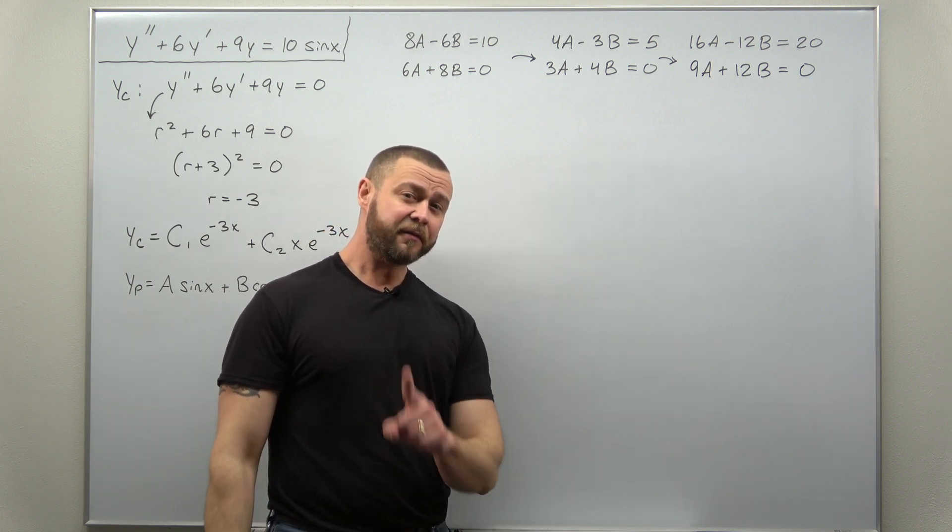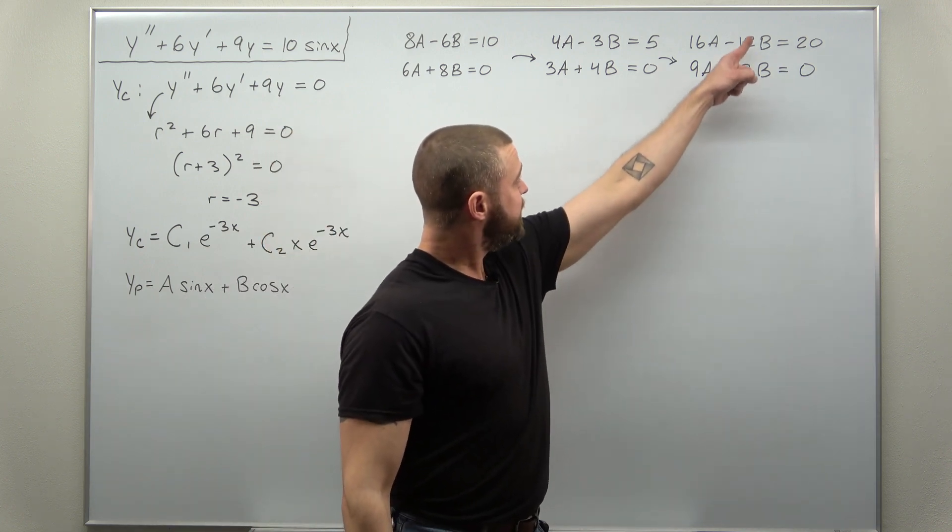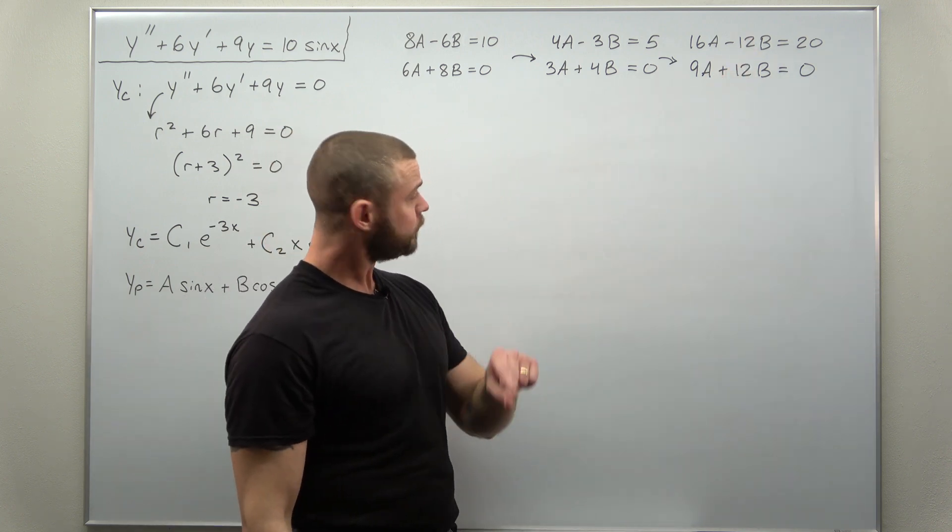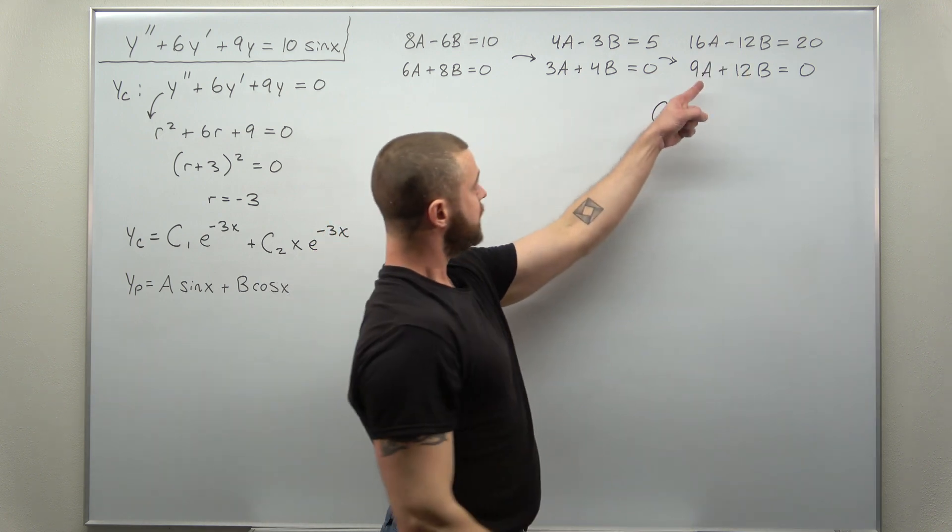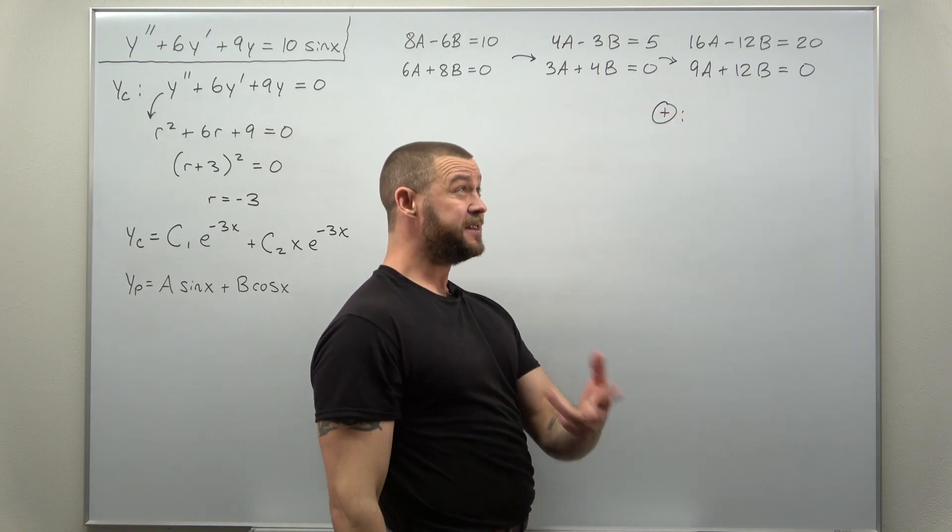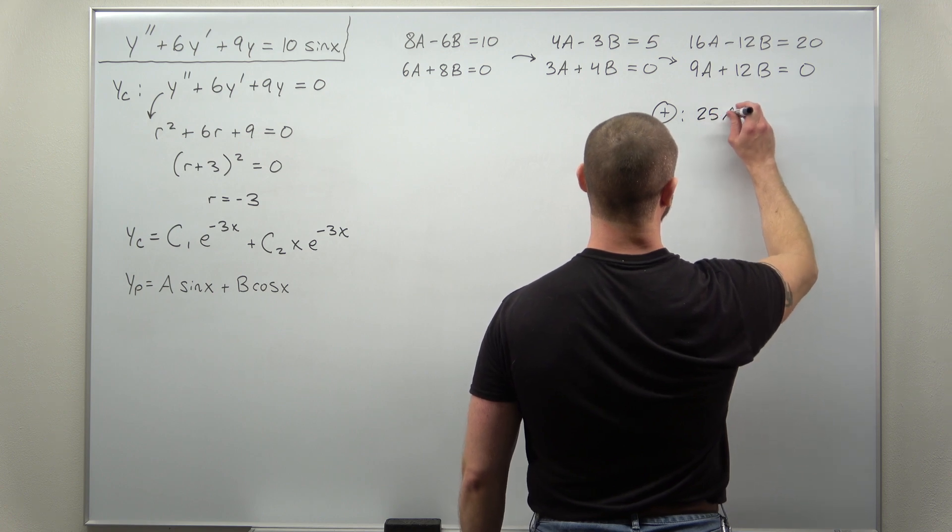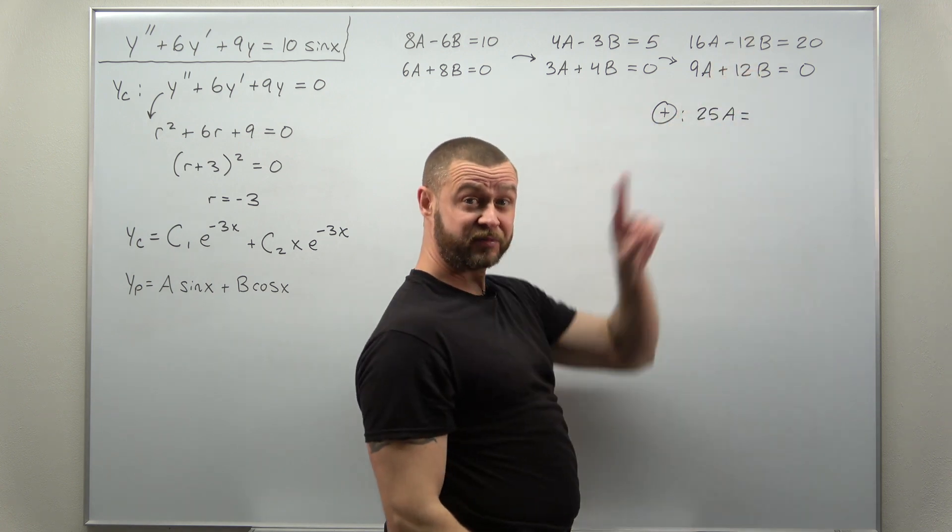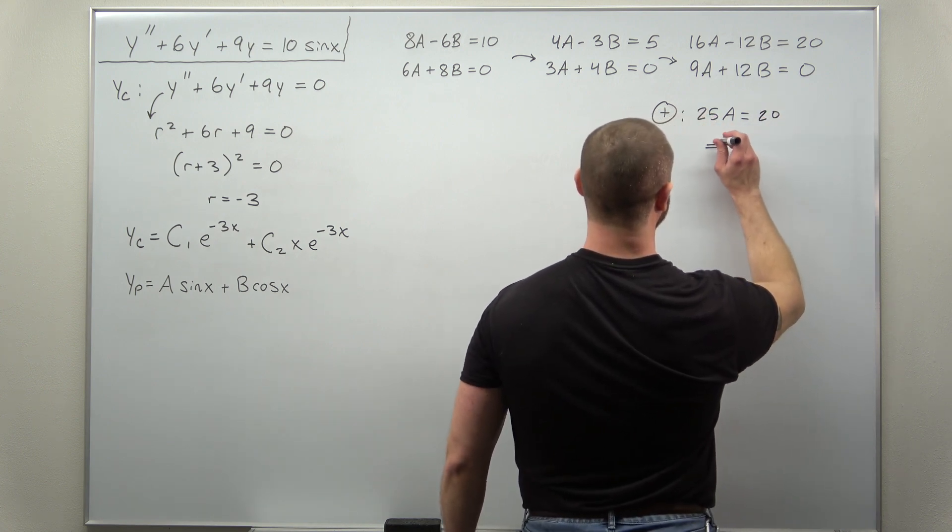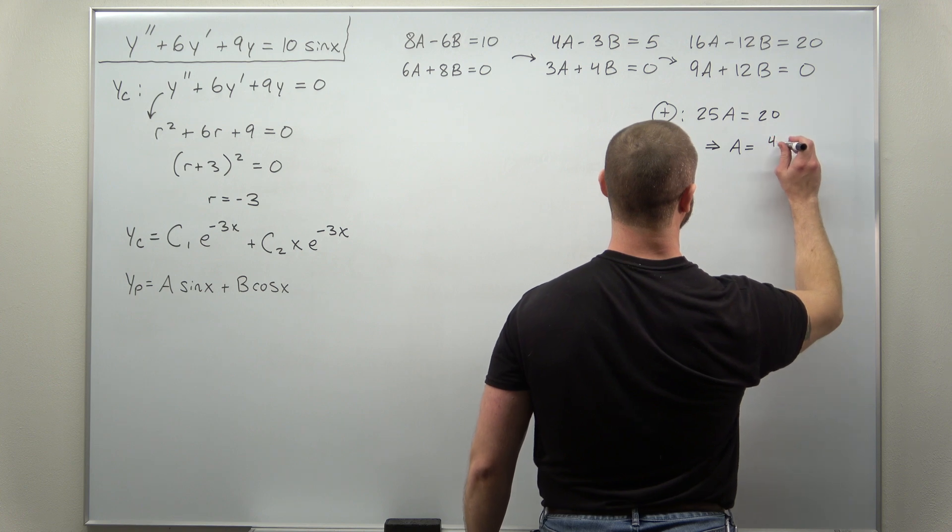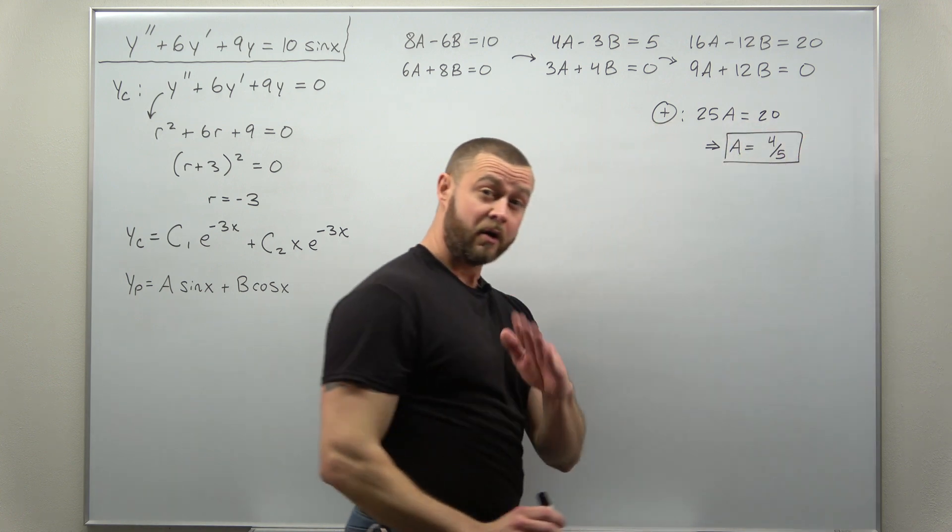From there, we can easily solve for a, add these two equations. You can get the b terms to cancel. And it looks like what we're left with by adding is basic math here, 16 plus 9, 25a. The b terms cancel. And we're left with 20. And that tells us we get our value of a as 4 over 5.